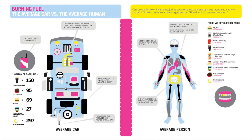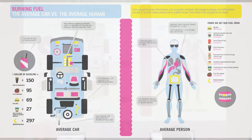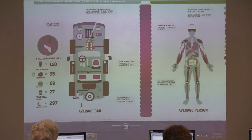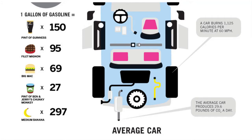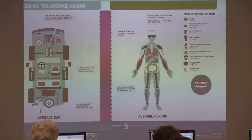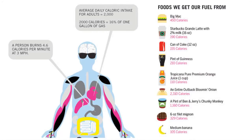The last comparison is burning fuel — the average car versus the average human. One gallon of gasoline equals one pint of Guinness times 150, filet mignon, Big Mac, Ben and Jerry's, and a medium banana. The same equivalents are shown for the human side. This one is entertaining yet informative, though we don't know how factual it actually is.